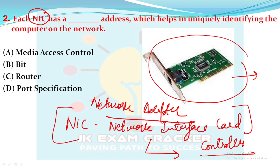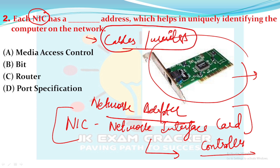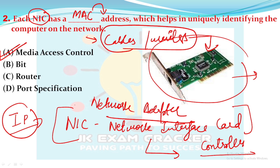The NIC helps your computer connect to the network — it can connect to the internet or to any network. It is associated with the MAC address, which stands for Media Access Control address. This is similar to your IP address in that every device connected to a network is uniquely identified. The major difference is that an IP address changes over time, but the MAC address does not. NIC works with the MAC address to connect to the network.